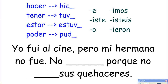Yo fui al cine, pero mi hermana no fue. No ___, porque no ___ sus quehaceres. I went to the movie theater, but my sister didn't go. She didn't do her chores — remember the spelling change on hacer in the ella form: it changes to a Z. Ella no hizo sus quehaceres — she didn't do her chores.